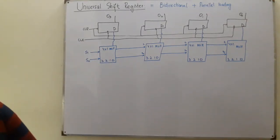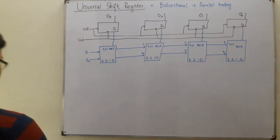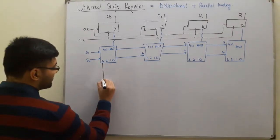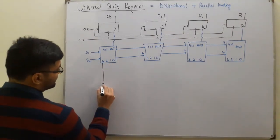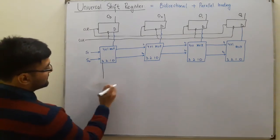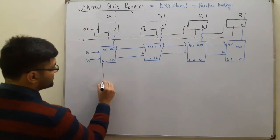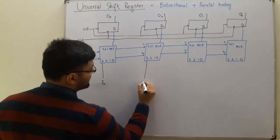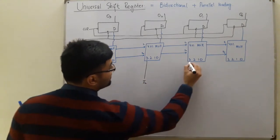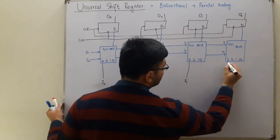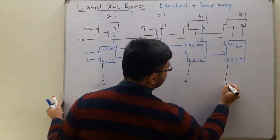Now, what are the inputs 3, 2, 1, and 0 of each multiplexer? For that I'll take help from my notes. Input 3 in all cases comes from the parallel loading — these are the parallel inputs I3, I2, I1, and I0.